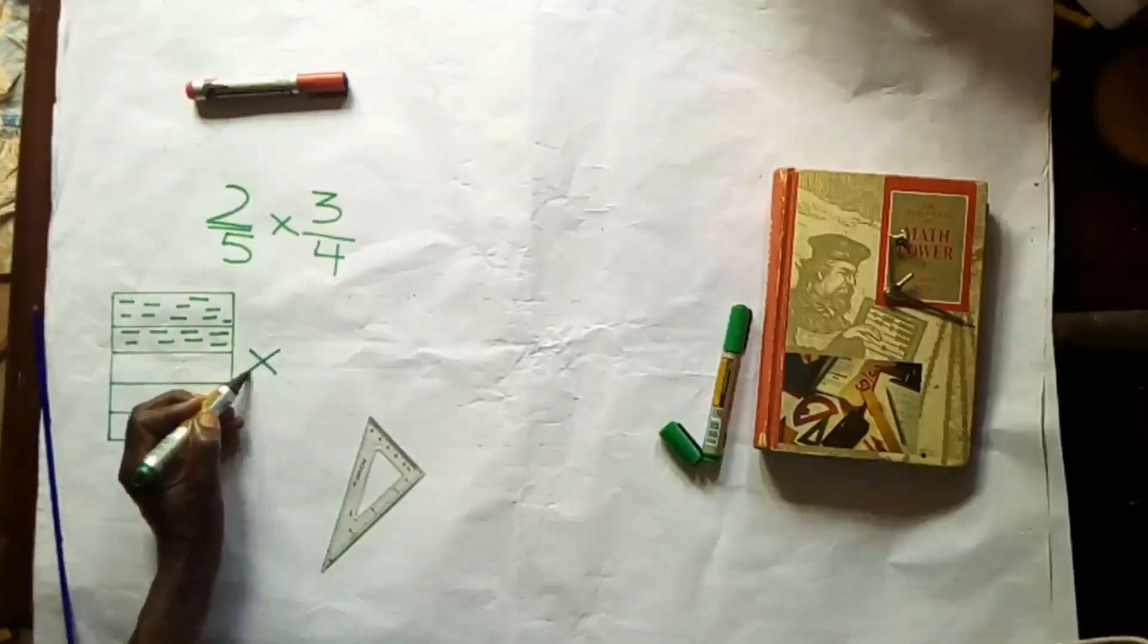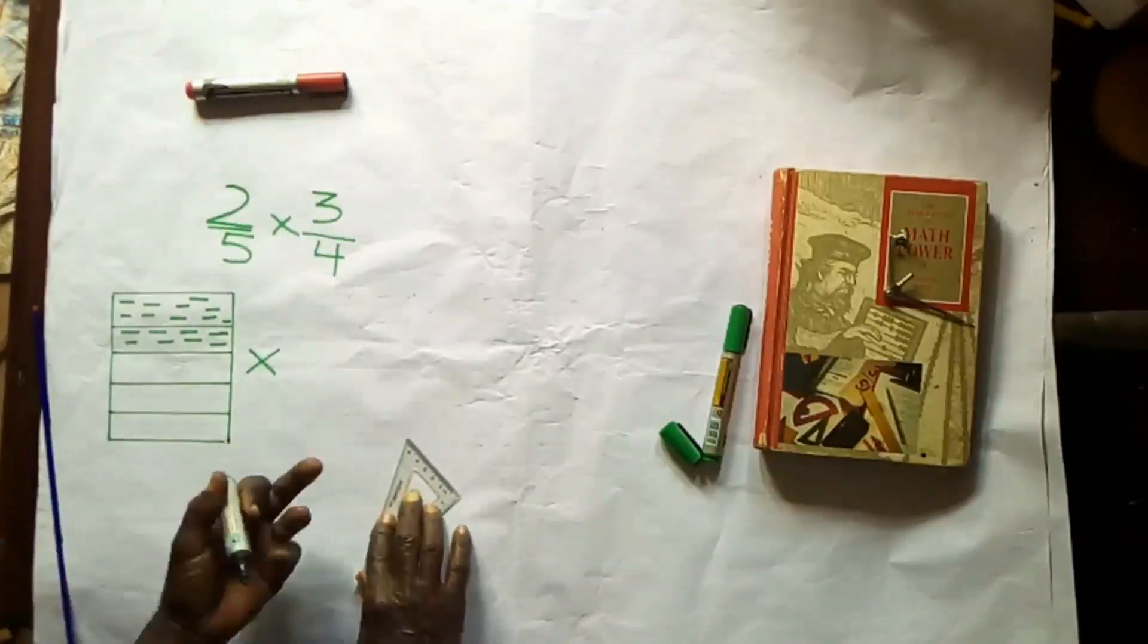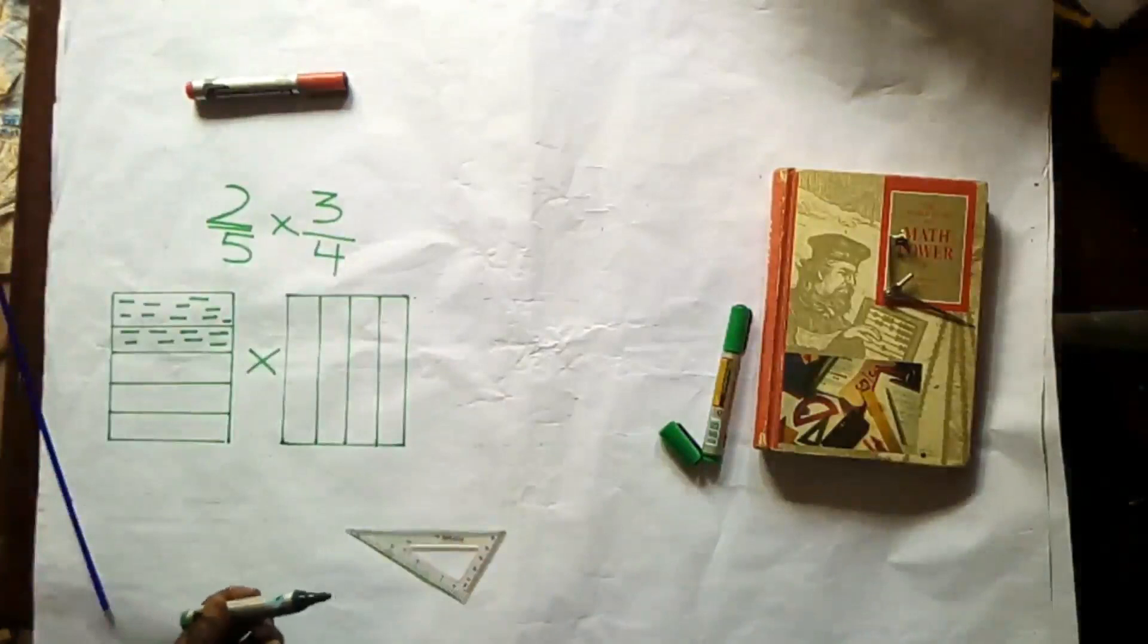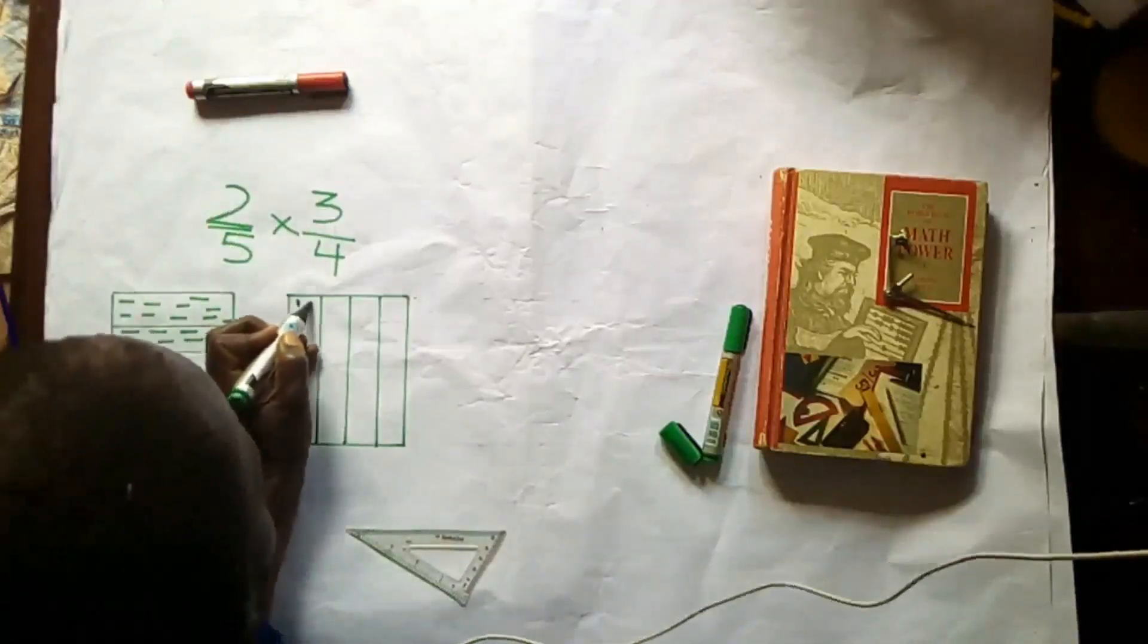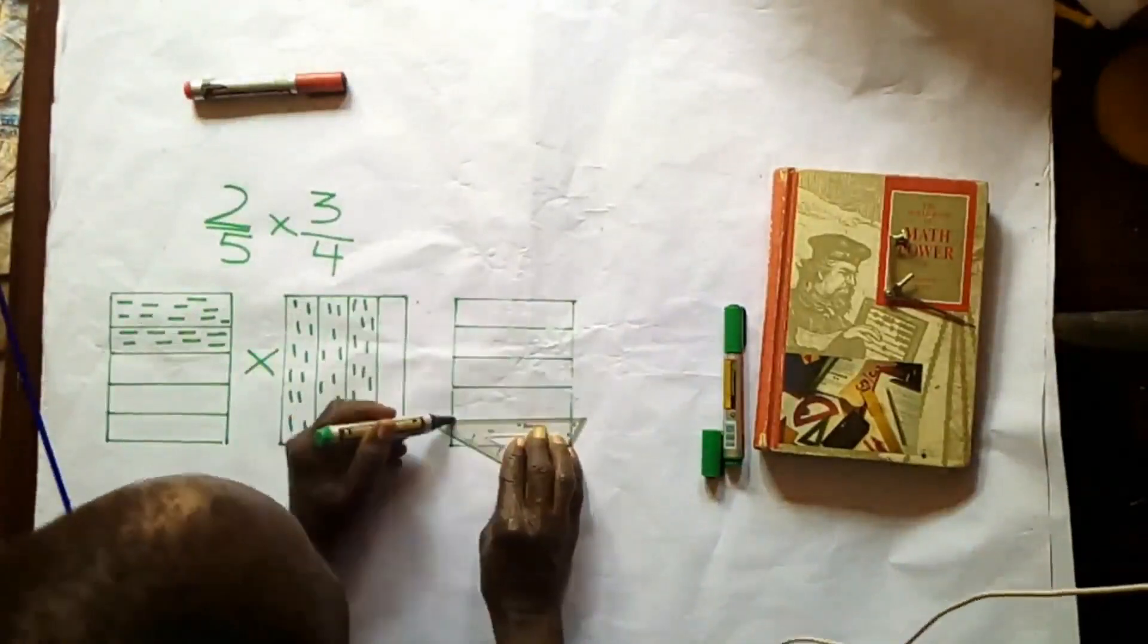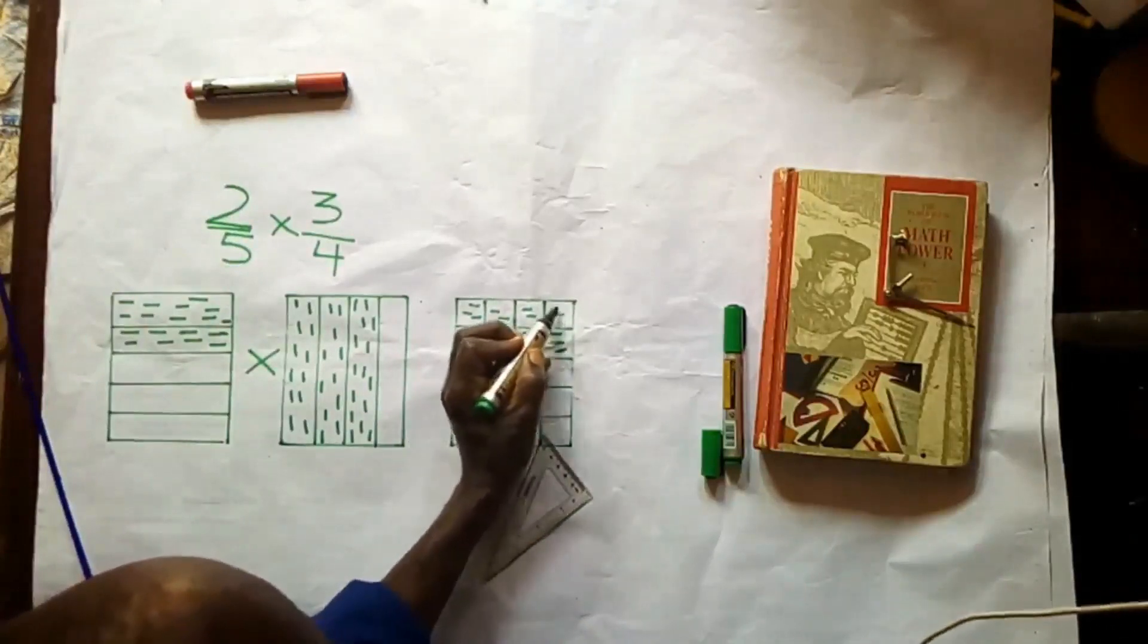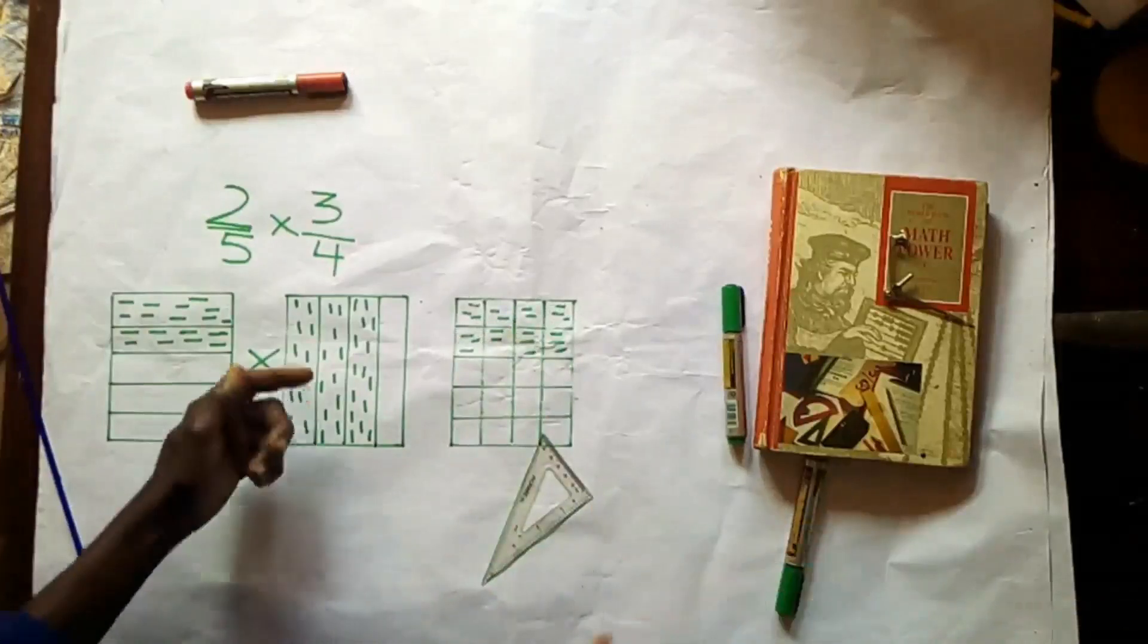Times 3/4. In the second rectangle, which we identify column-wise, you take four columns. We are shading 3 out of 4. We have 2 out of 5 rows, and then we shade both fractions to find the intersection.